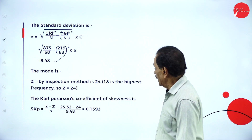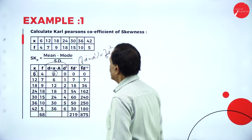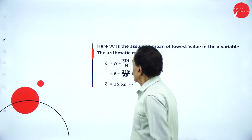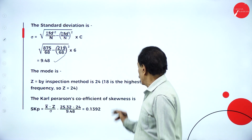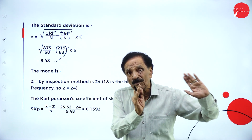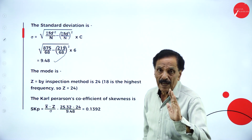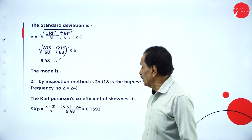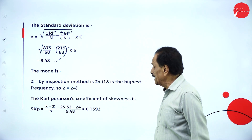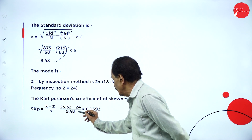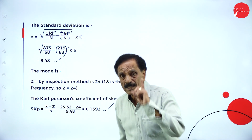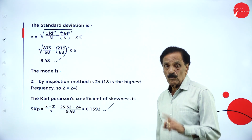Mode lies in the highest frequency. Looking at the problem, 18 is the highest frequency. Therefore, mode lies under the value 24. By the inspection method, Z (mode) = 24. Apply Karl Pearson's coefficient of skewness: mean minus mode divided by standard deviation = 25.32 minus 24 divided by 9.48. The answer is 0.1392. Your answer should be less than 1 - the answer comes to 0.1392.